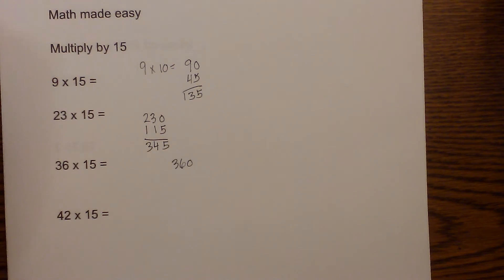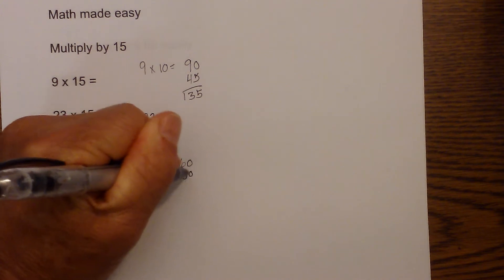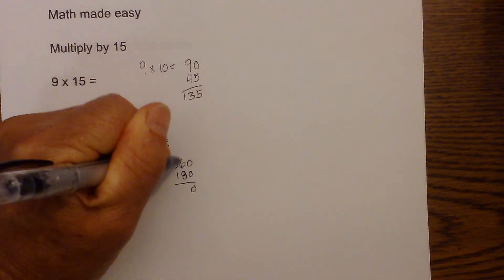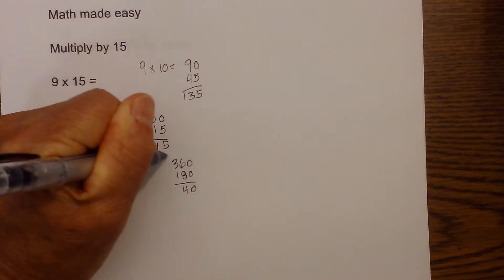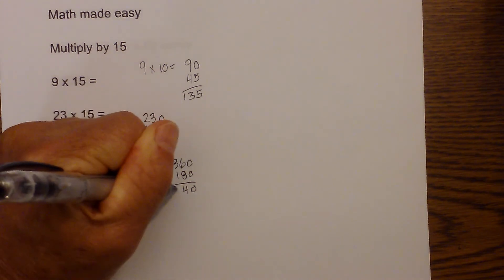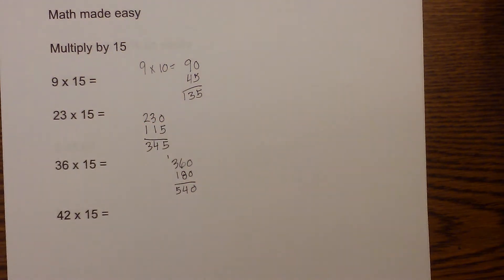Half of 360 is 180. Add this together: 8 plus 6 is 14, carry the 1, 3, 4, 5, giving 540. And the last one...